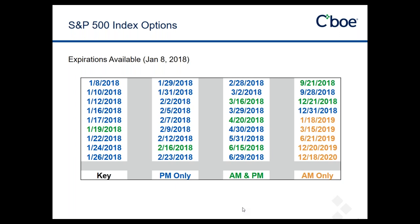These are the expirations available as of Monday, January 8th. We had Monday the 8th, Wednesday the 10th, Friday the 12th, and then the last two days. Typically we have Monday PM settled options; if Monday is a holiday, we have Tuesday expiration. So Tuesday, Wednesday, and Friday this week we actually have options expiring. We do have AM and PM options expiring this coming Friday, then a whole lot of PM expirations up until the next 3rd Friday. At minimum we'll have three expirations a week, sometimes four in the same week.